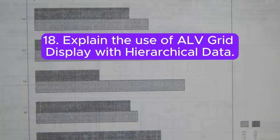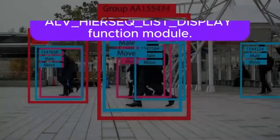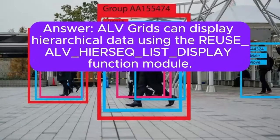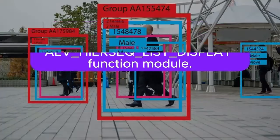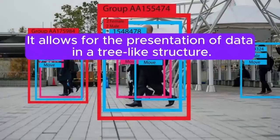Question 18: Explain the use of ALV grid display with hierarchical data. Answer: ALV grids can display hierarchical data using the REUSE_ALV_HIERSEQ_LIST_DISPLAY function module. It allows for the presentation of data in a tree-like structure.